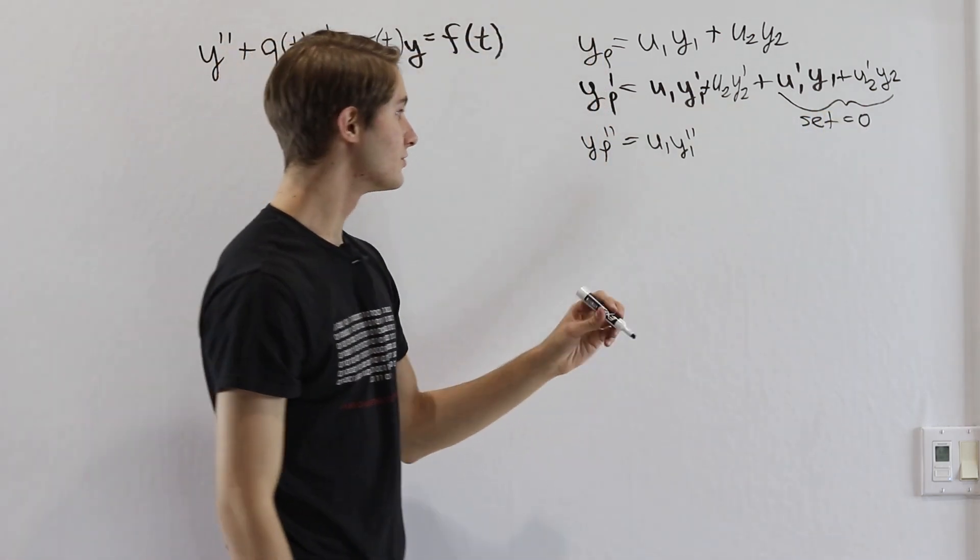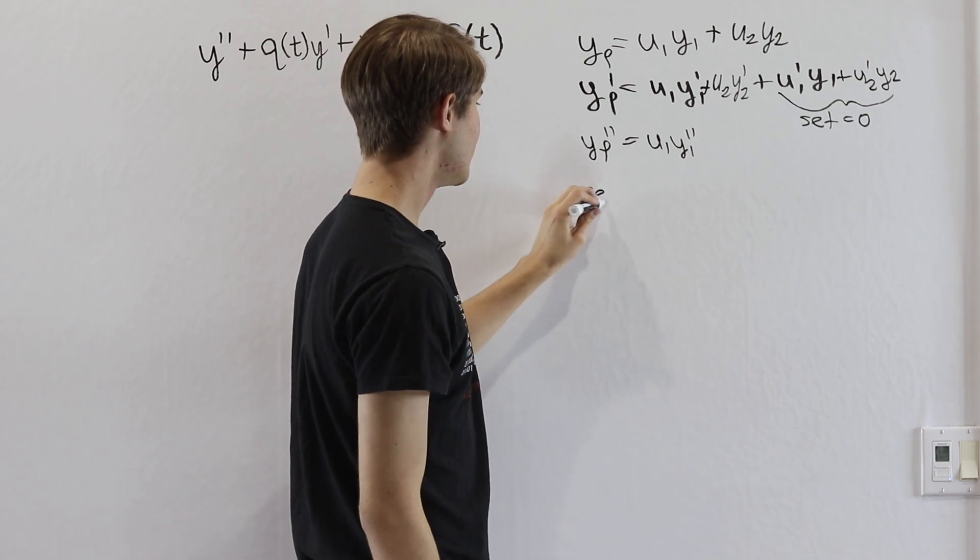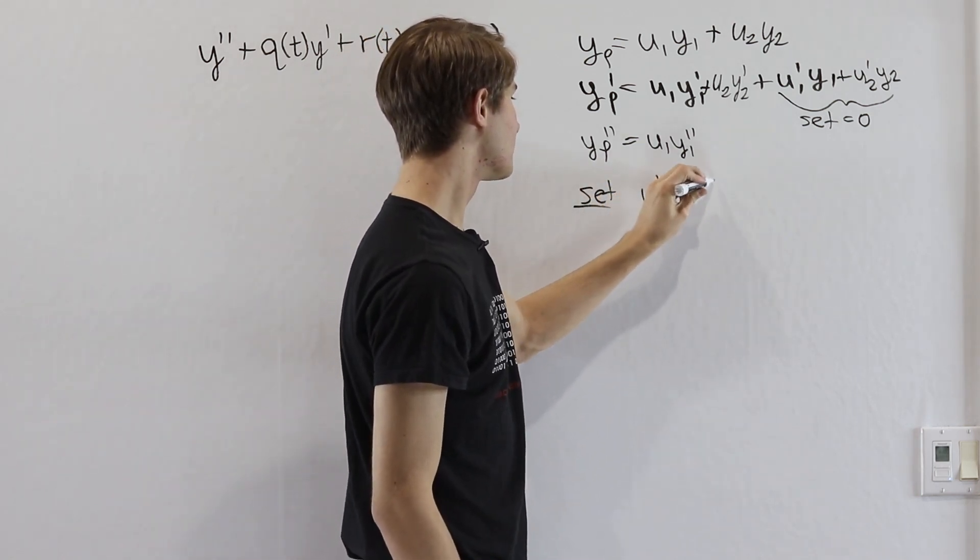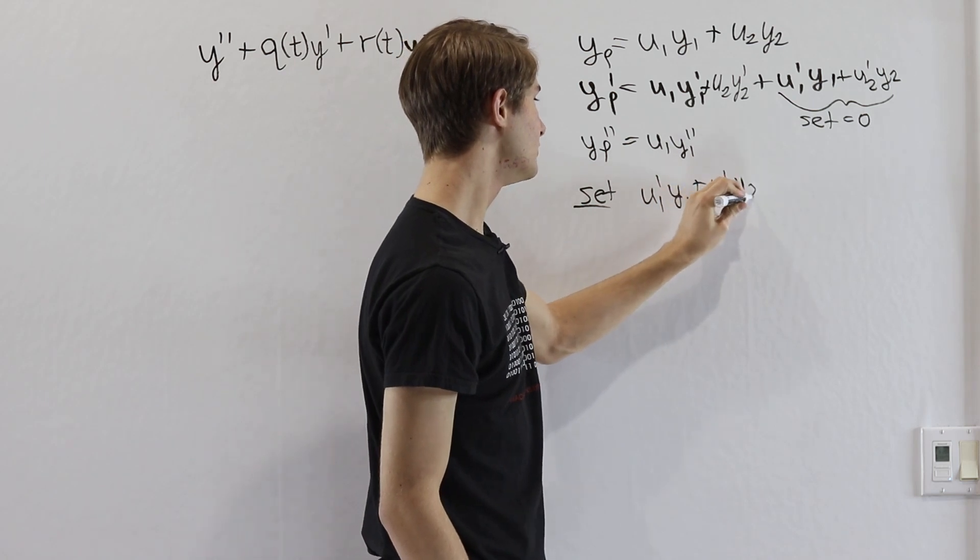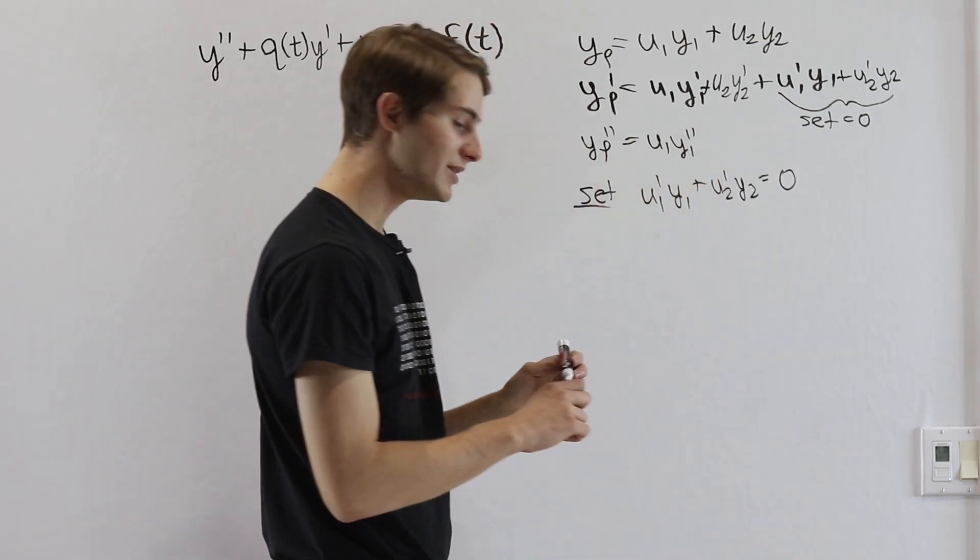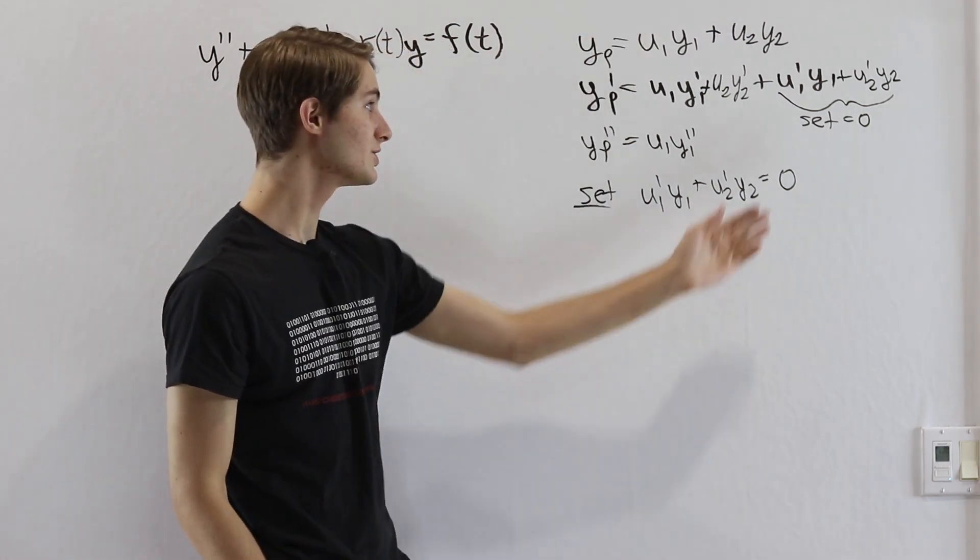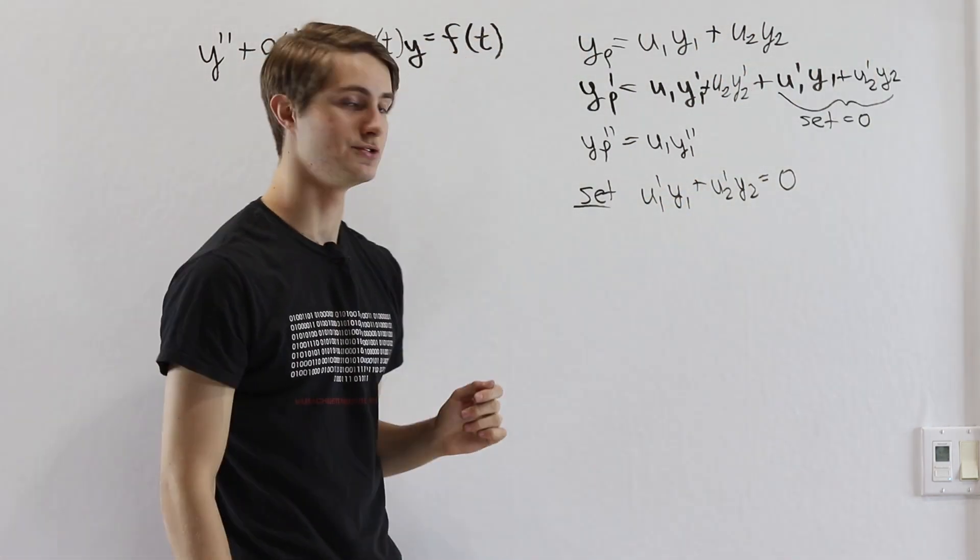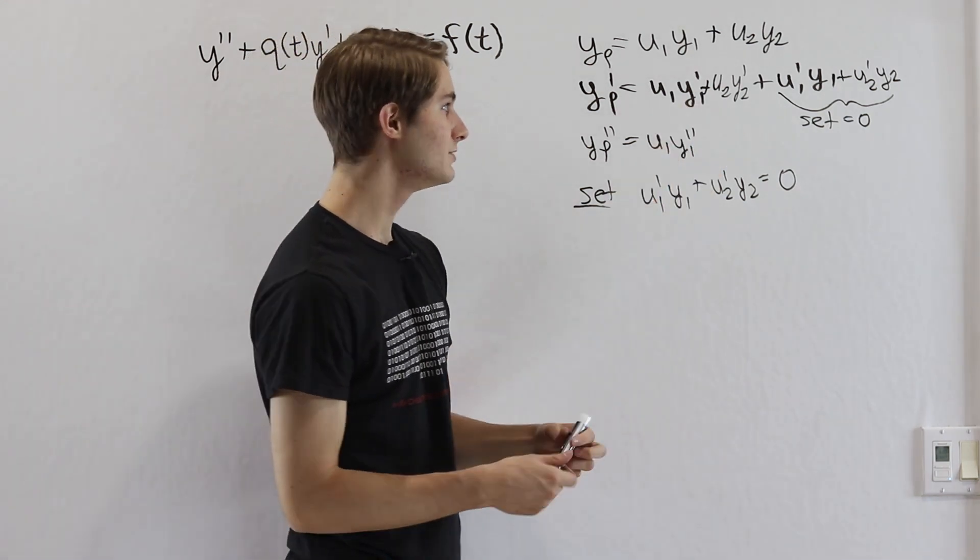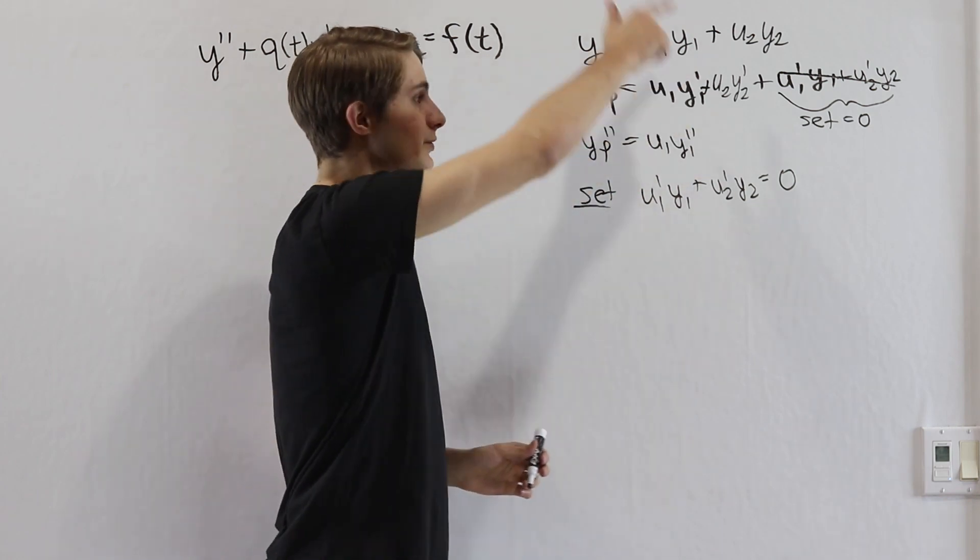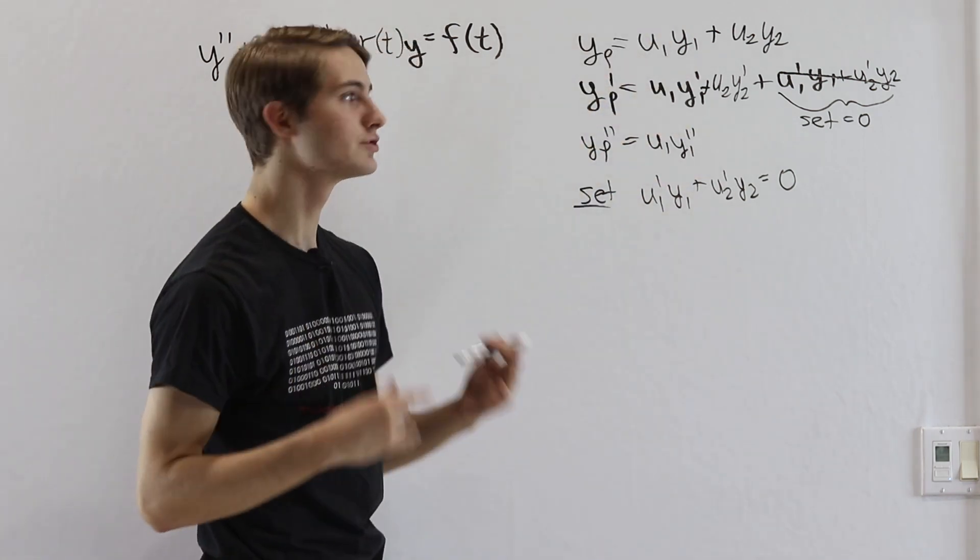We're going to add an additional constraint here and say, we're going to set u1 prime y1 plus u2 prime y2 equal to 0. And again, this is why having two of those solutions is so important - it lets us add this extra restriction to get rid of that u1 prime u2 prime. That's really nice because then we can cancel this out and just have the stuff that we want, the stuff that cancels out so much cleaner.